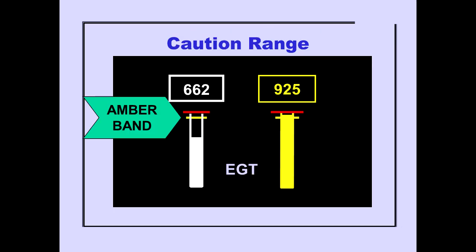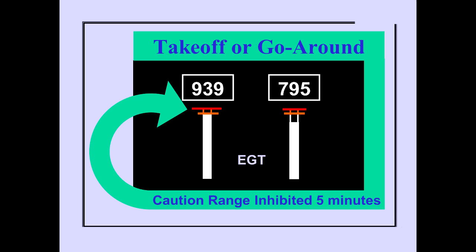The caution range is displayed as an amber band. When EGT enters the caution range, the indication changes color to amber. If, during takeoff or go-around, the EGT reaches the caution range, the EGT indications are inhibited from turning amber for five minutes after the respective thrust is set.